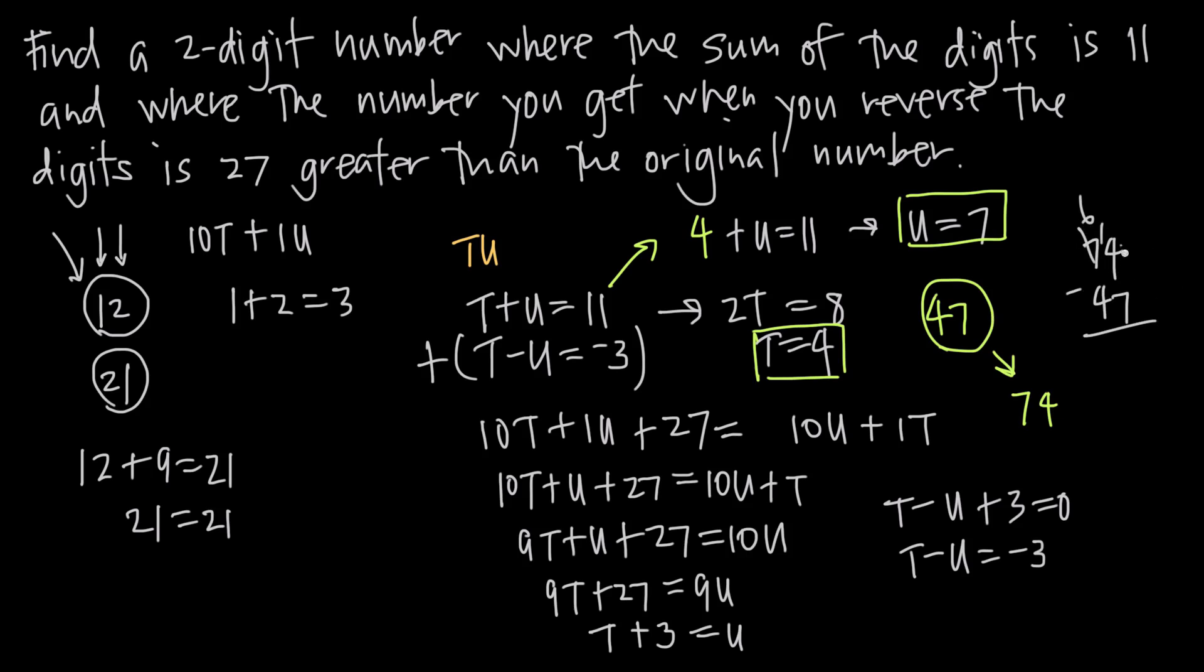So we get 6 here, 14 minus 7 is 7, 6 minus 4 is 2, we do get 27. So that means that 47 is, in fact, our final answer.